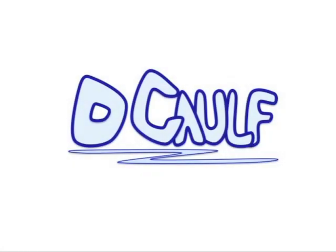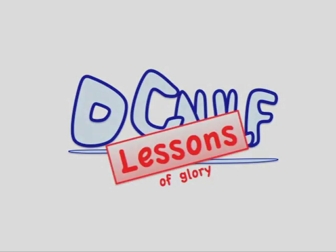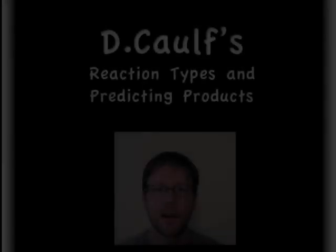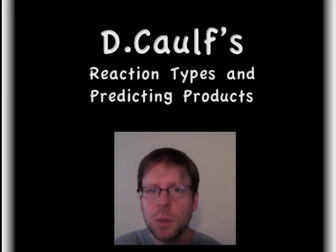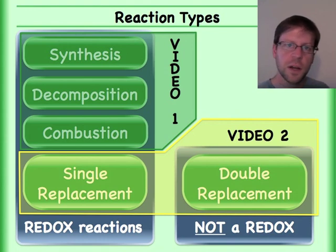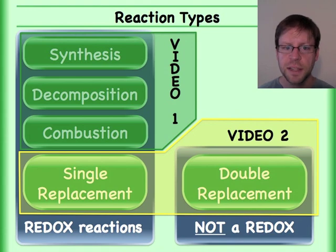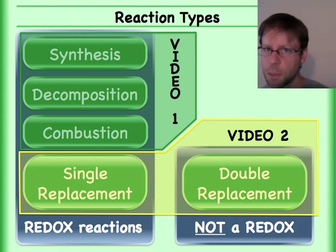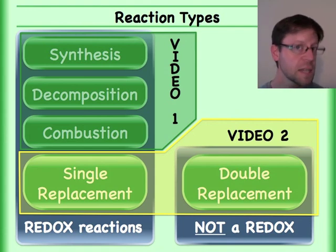All right everybody, this is going to be part two of reaction types and a little bit about predicting products. You've seen this slide before — in the first video I talked about those first three redox reactions. This is the video where I'm going to go ahead and talk about single replacement and double replacement reactions.